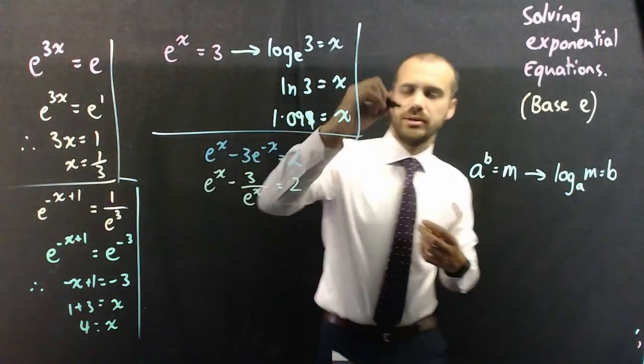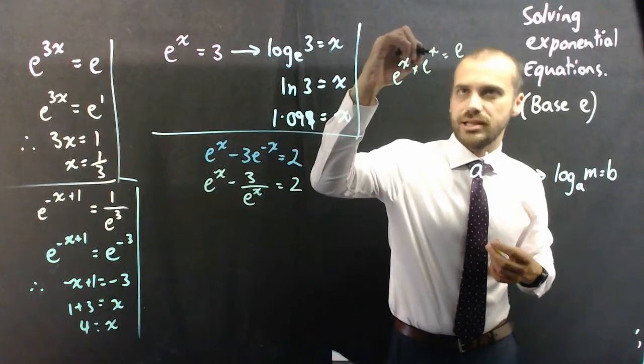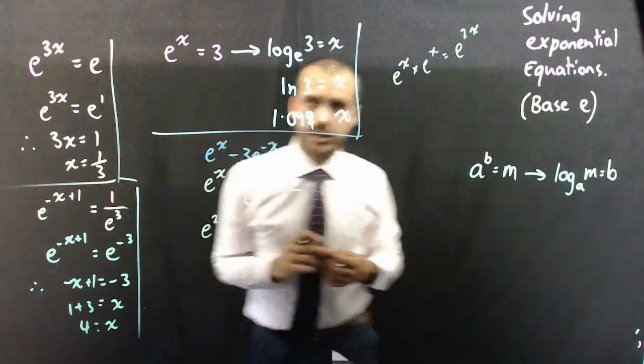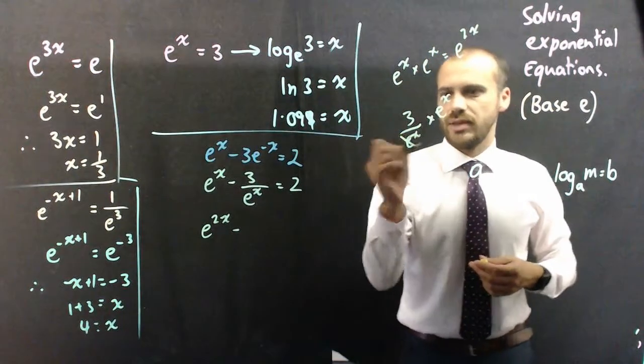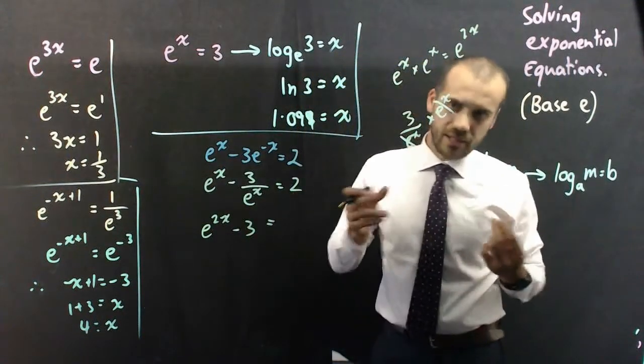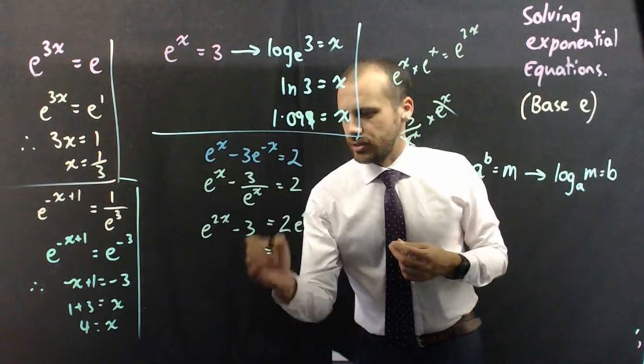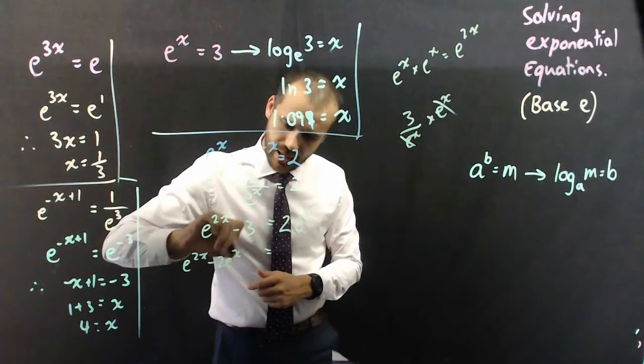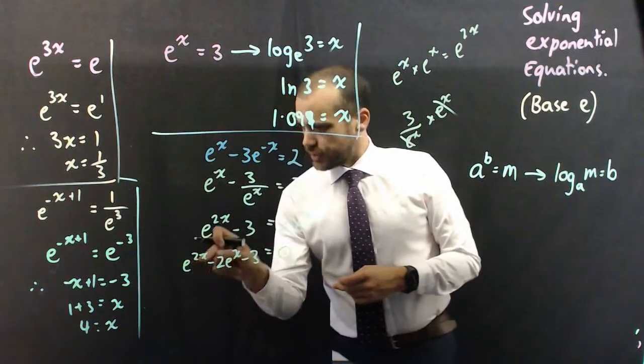e to the x times e to the x would be e to the x plus x, which is e to the 2x. So, e to the 2x minus. Now, if I multiply 3 over e to the x by e to the x, they're going to cancel out, and I'm just going to have minus 3. And if I multiply 2 by e to the x, 2 times e to the x is 2 e to the x. Now, if I rearrange that to put everything on the left-hand side, I'll have e to the 2x minus 2 e to the x minus 3 equals 0.